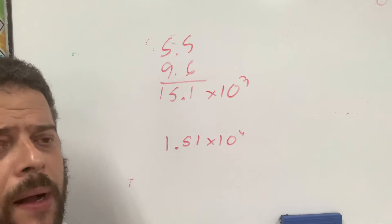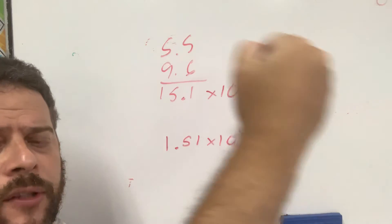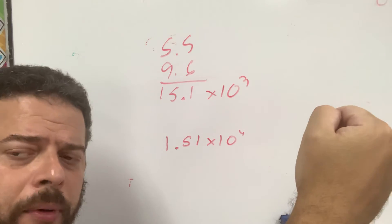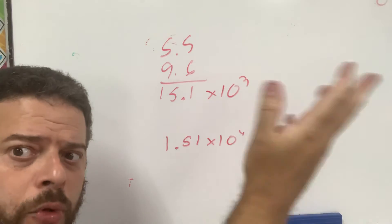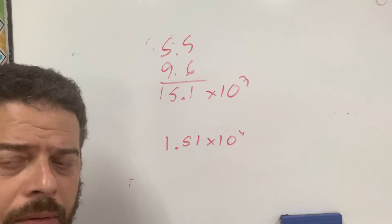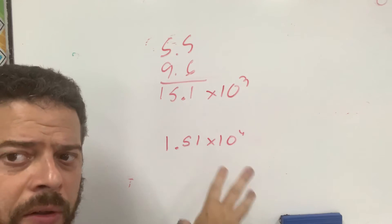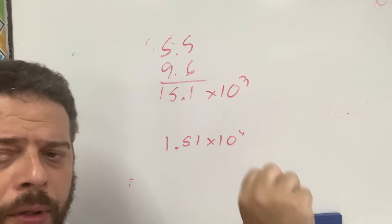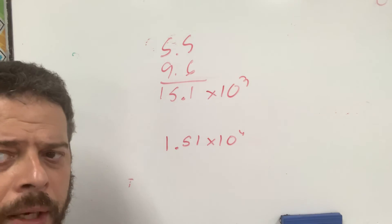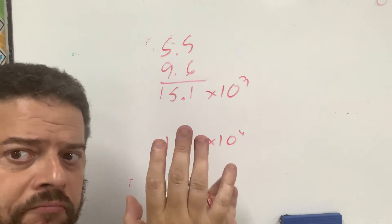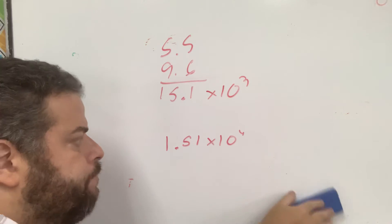If you are subtracting, it's the exact same process — only instead of adding, you would be subtracting. You turn your smaller exponent into your bigger exponent, then do the subtraction with just the coefficients, and then put the base with the bigger exponent. That's it.